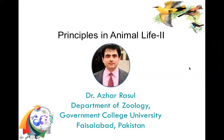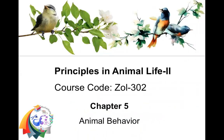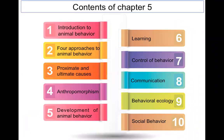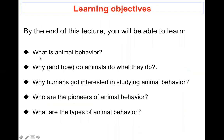In our series of basic courses, we will continue with the basic course on principles in animal life. Today we start chapter five: animal behavior. The chapter includes introduction to animal behavior, approaches to animal behavior, proximate and ultimate causes, anthropomorphism, development of animal behavior, learning, control of behavior, communication, behavioral ecology, and social behavior. Today's lecture will focus on the first two topics.